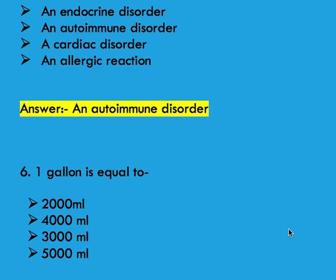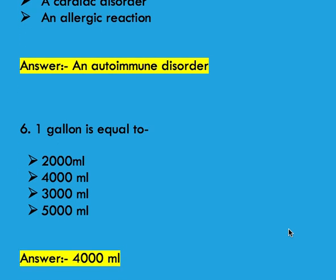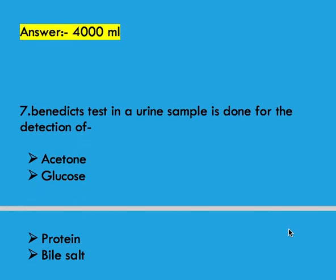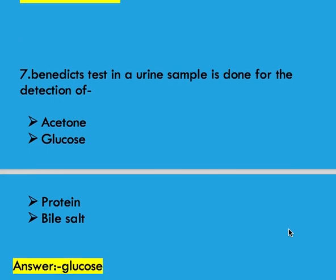Next question: one gallon is equal to options 2000 ml, 4000 ml, 3000 ml, and 5000 ml. Right answer is 4000 ml. Next question: Benedict's test on a urine sample is done for the detection of options: urea, glucose, protein, and wild salt. Right answer is glucose.